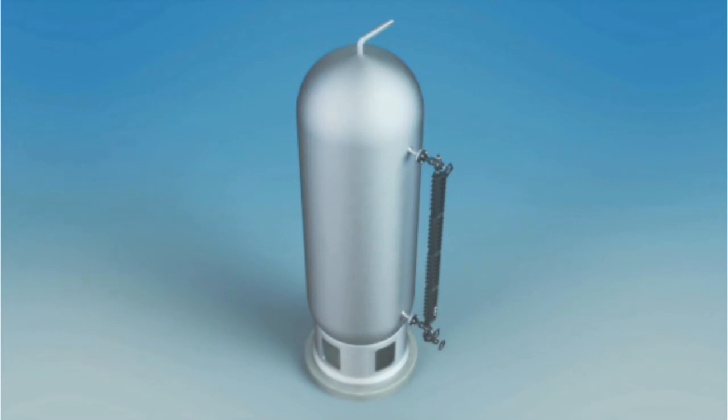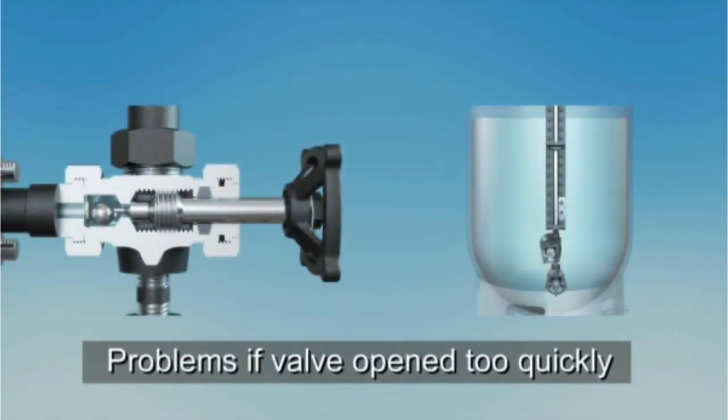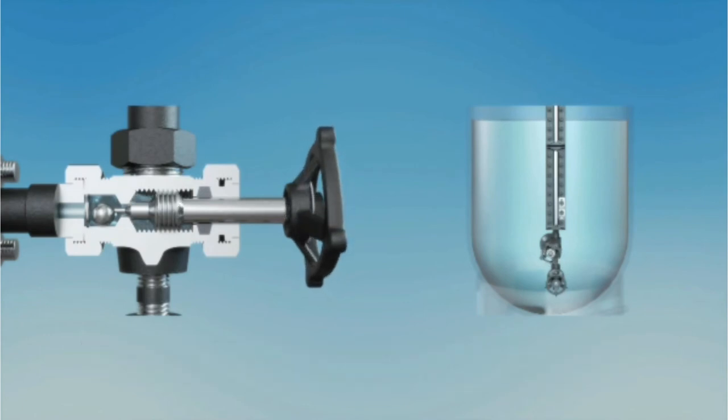Now let's see what occurs when the bottom valve is opened too quickly. The initial one-quarter to one-half turn allows liquid to flow through the valve into the gauge.